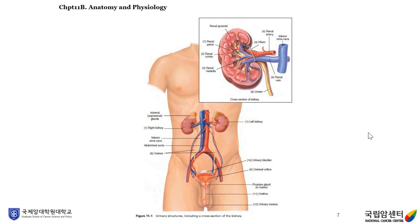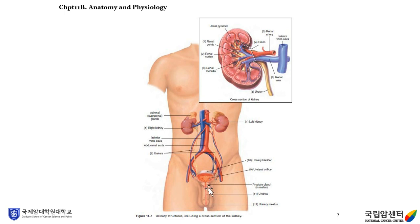This figure shows the urinary structures, including a cross-section of the kidney. Number one is the right kidney, and you can also see the left kidney and adrenal glands on top of the right kidney. You can see the inferior vena cava (blue) and the abdominal aorta (red). From both kidneys, ureters go down to the urinary bladder, with the ureteral orifice at the back of the urinary bladder. You can also see the prostate gland below the urinary bladder in males.